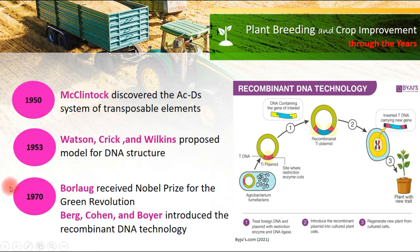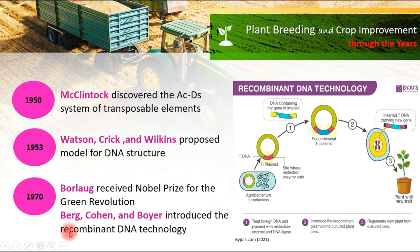In 1970, Borlaug received the Nobel Prize for the Green Revolution. Also during this time, Berg, Cohen, and Boyer introduced recombinant DNA technology.